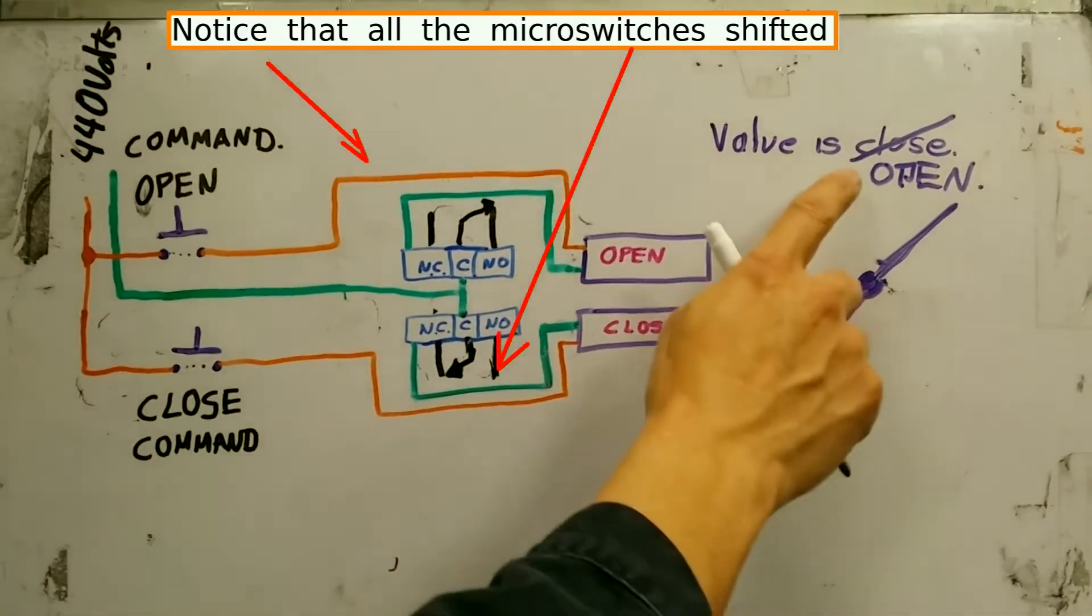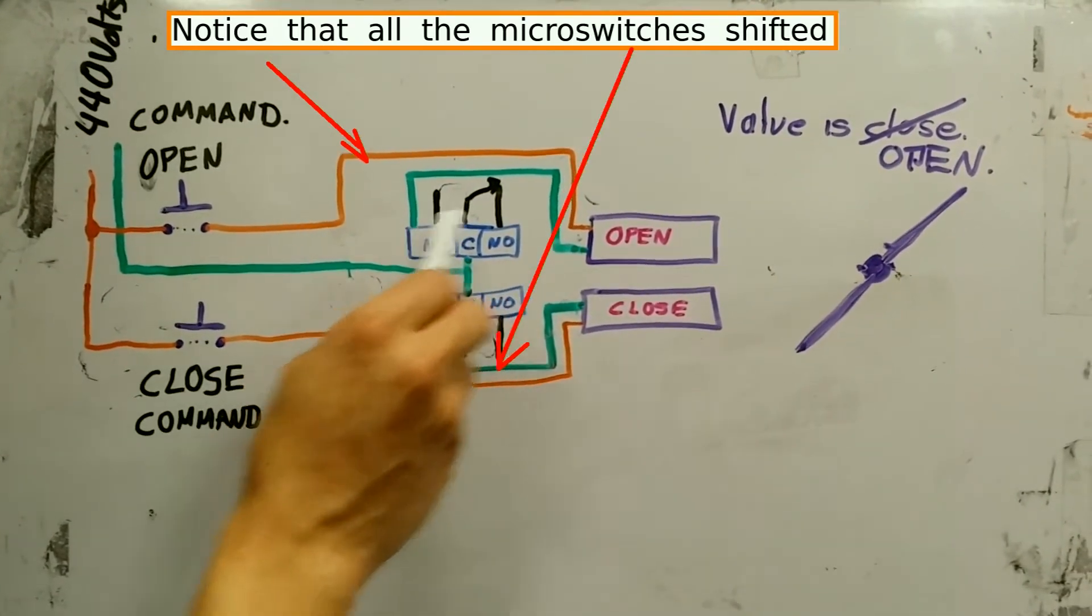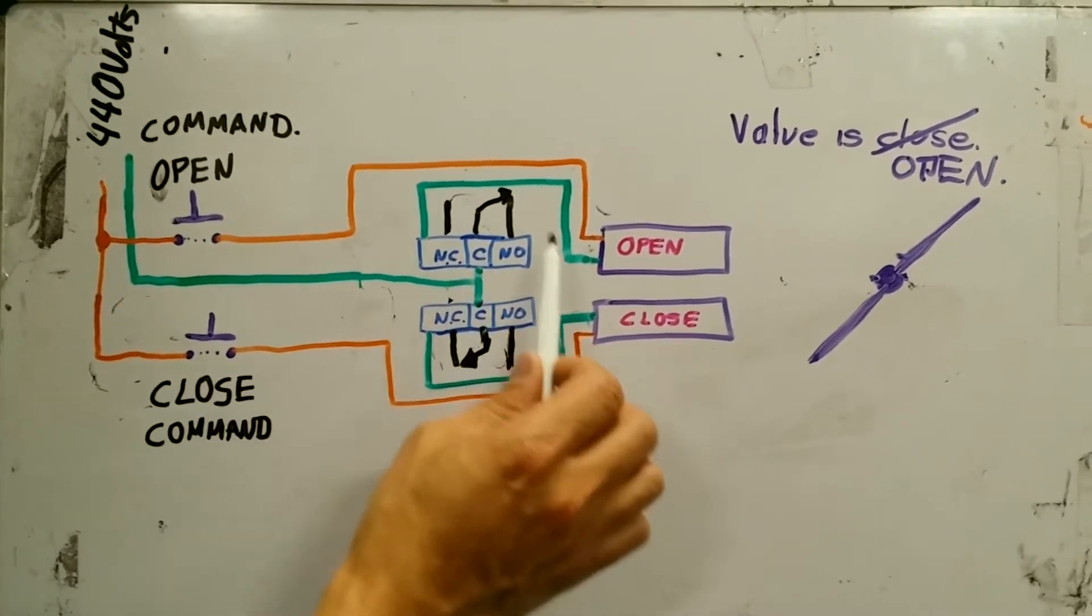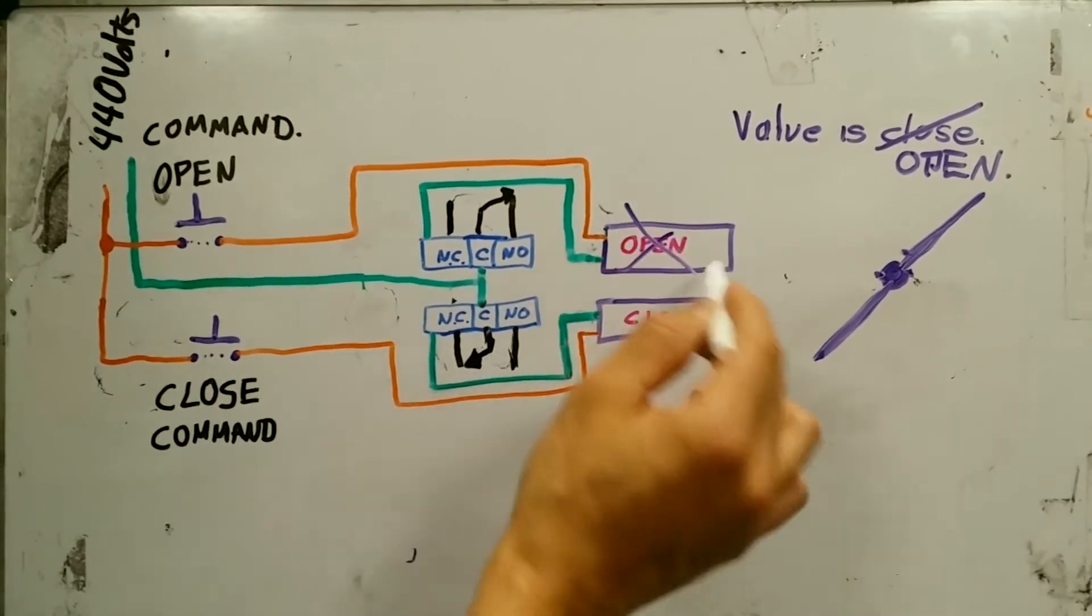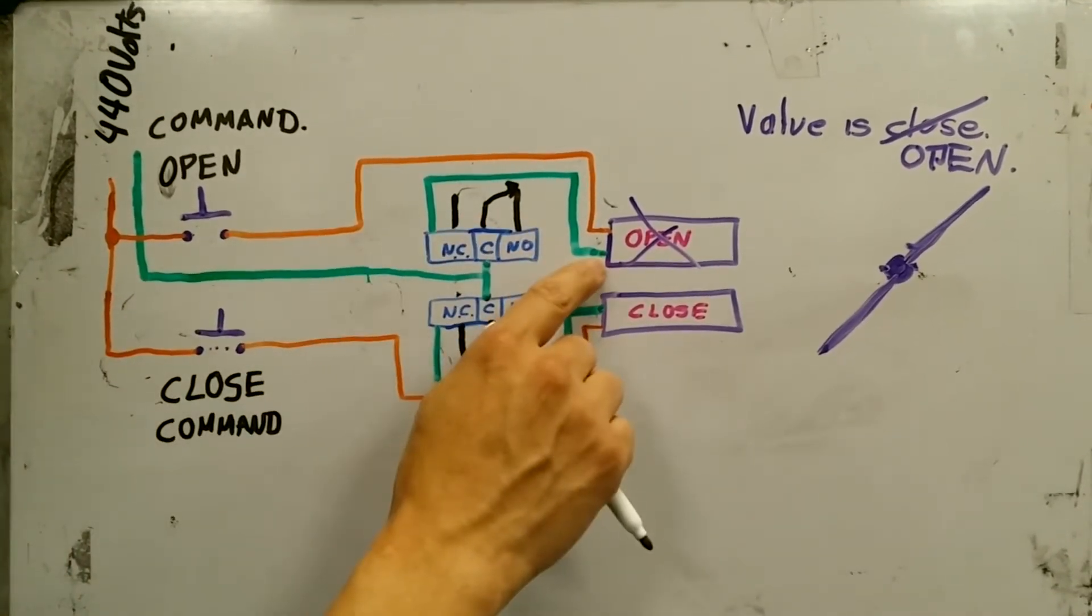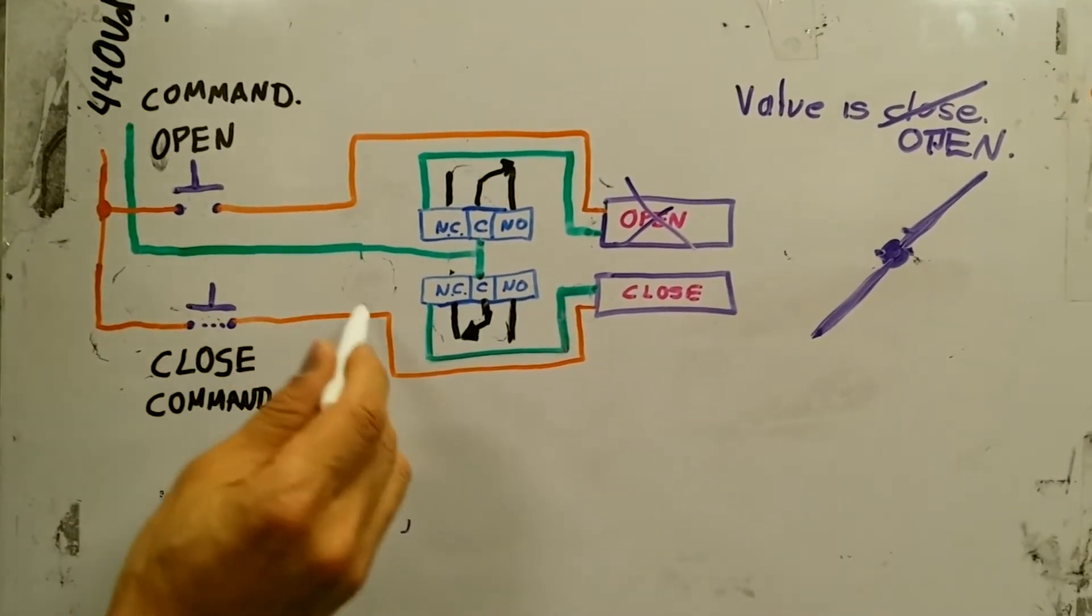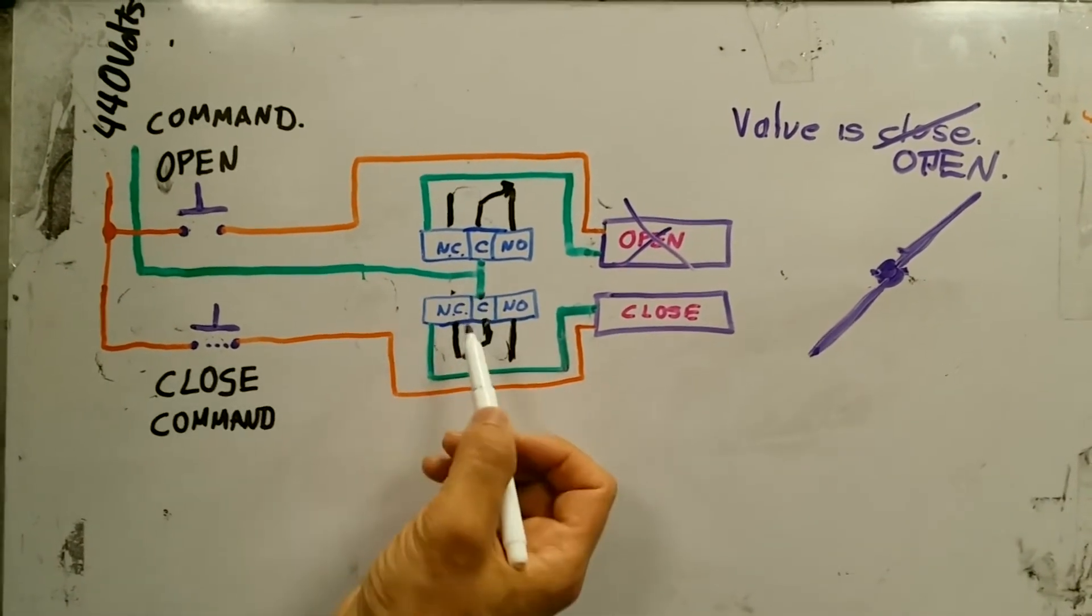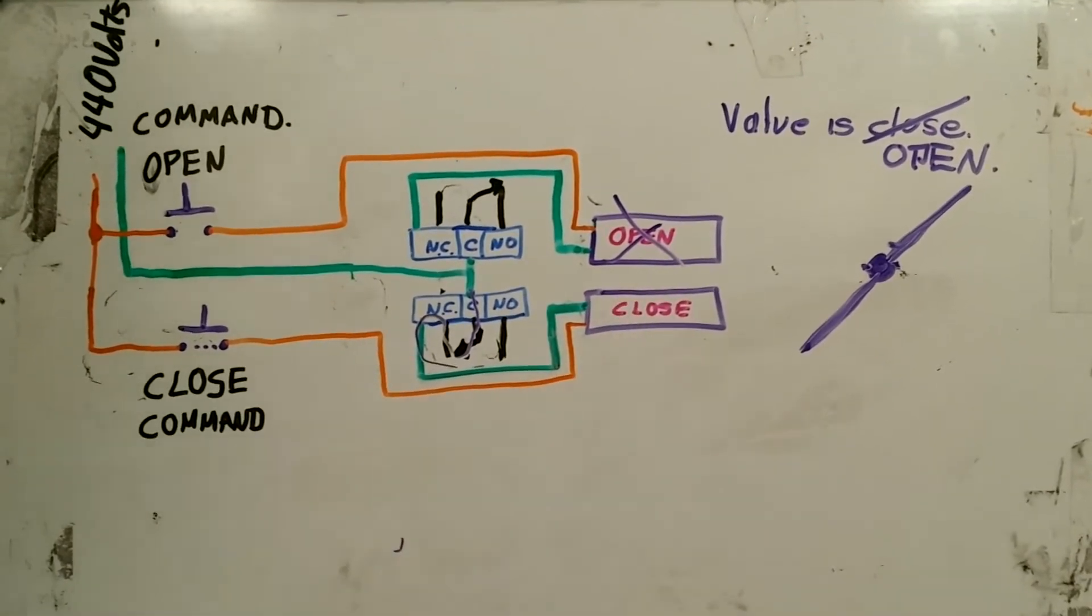Three, go. Notice that the valve immediately shifts, now it's open, this thing changes, and these guys change. Therefore, by this micro switch shifting, it will no longer put green power on the solenoid coil, so this will be dead again. Now, even if I press the open again, nothing will happen. If I press the closed command, the opposite will happen because by pressing this one, I'm putting orange power to the valve, but the valve already has green power because due to this shift, the valve is ready to be energized.